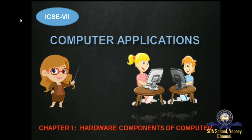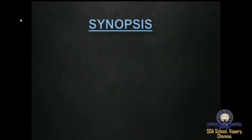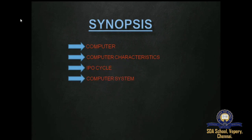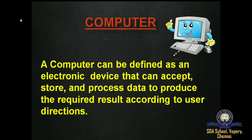Now let us start from Chapter One: Hardware Components of Computer. In this chapter we are going to see about computer, computer characteristics, IPO cycle, computer system, hardware and software. First, we will see about computer. Does anyone know what is a computer?